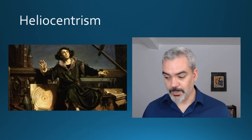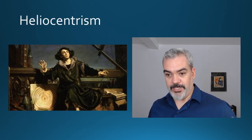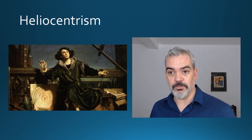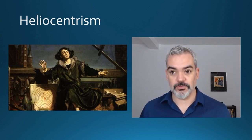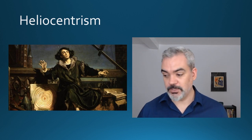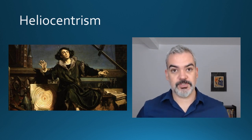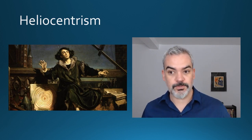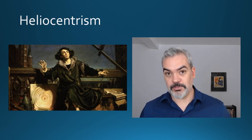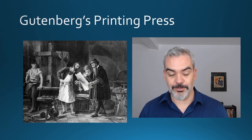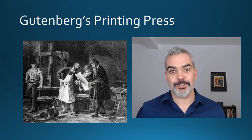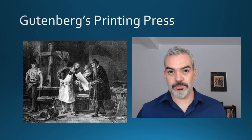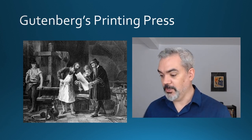We also get profound scientific changes. This is the period in which heliocentrism is introduced — we'll talk about that again next week. Copernicus's theory that the earth goes around the sun rather than the sun going around the earth gets introduced in this period. We also see profound technological changes, including Gutenberg's printing press introduced in Europe. So a lot of stuff is going on.